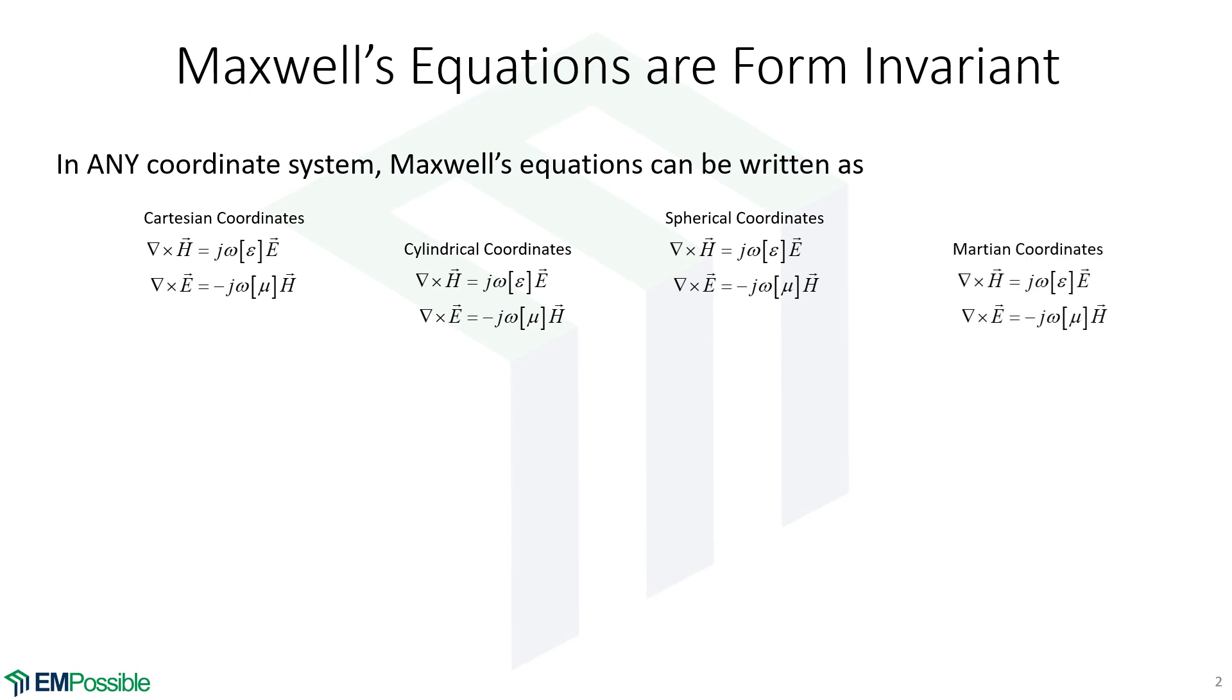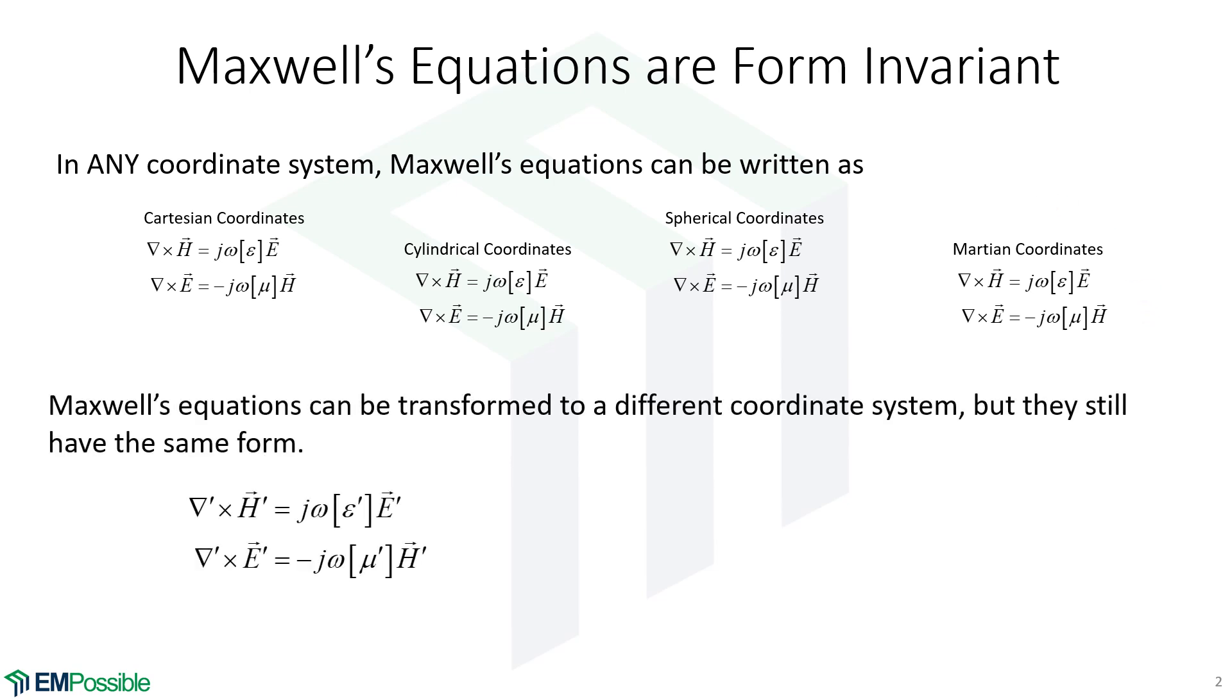We could write Maxwell's equations in Martian coordinates. That doesn't even exist. But you know what? If it did, Maxwell's equations would still look this way. Maxwell's equations look the same no matter what coordinate system we write them in. That's the all-important property of Maxwell's equations.